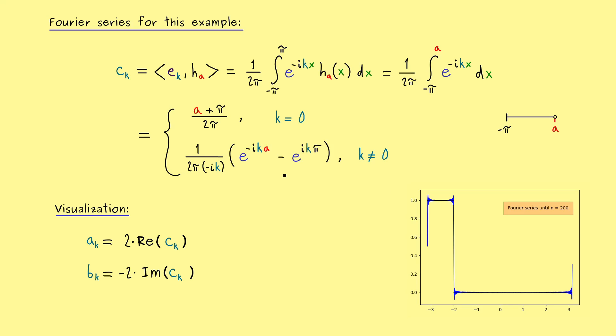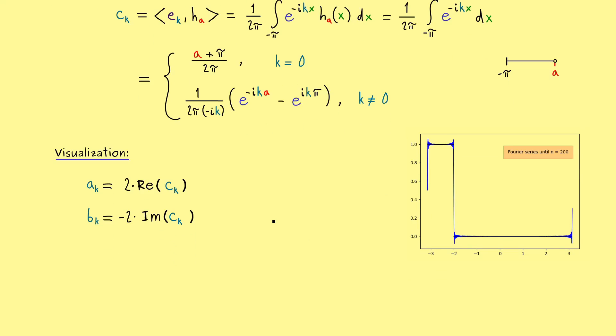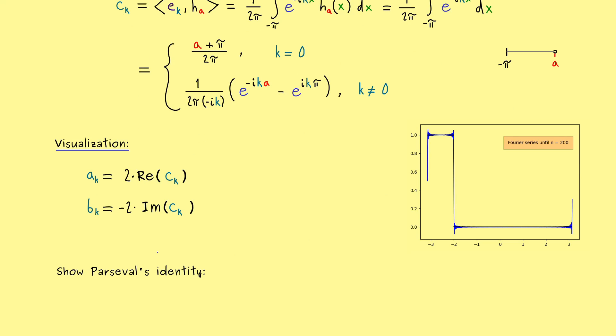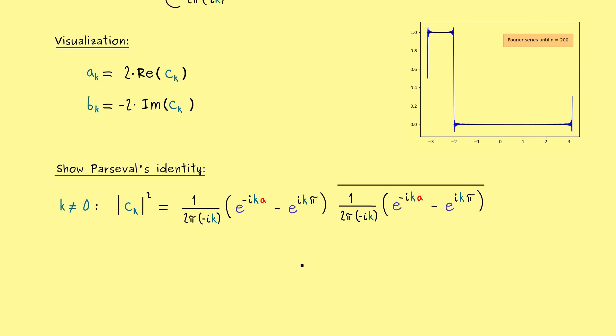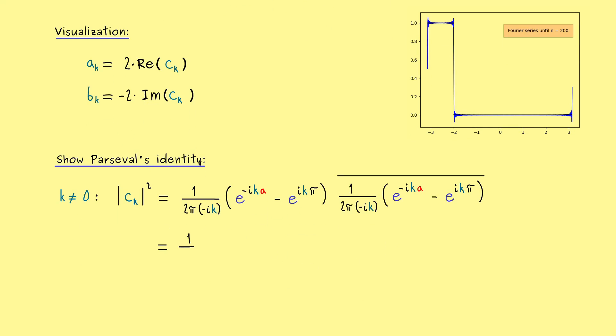So even in the pointwise sense we are very close to the function at least in this area here. So at least our visual conclusion here is that the Fourier series converges in the L2 sense as we expected. Therefore let's now go to the mathematical proof by showing Parseval's identity. In order to do that we have to take our coefficients c_k and then we simply have to sum them up. More precisely we have to sum up the absolute value of c_k squared. Therefore let's first calculate this number for each k. And obviously only the case k is not equal to zero makes some work here. So what we do is to multiply this number here with its complex conjugation.